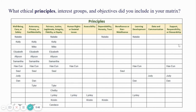As students, we included a range of ethical principles: well-being, care or safety, autonomy, privacy or confidentiality, fairness, justice, legitimacy, integrity, fidelity or equity, human rights or societal issues, accessibility, dependability, honesty and trust, beneficence or non-maleficence, learning development, data and communication and support, and responsibility or stewardship.